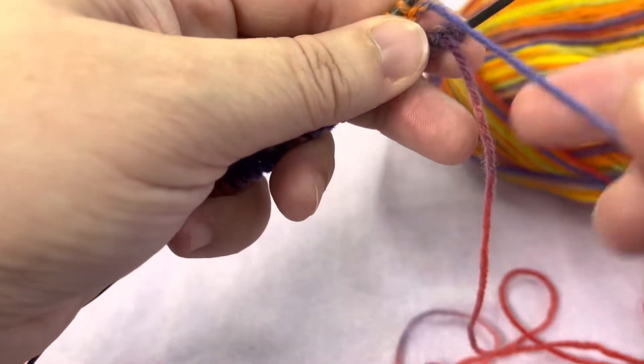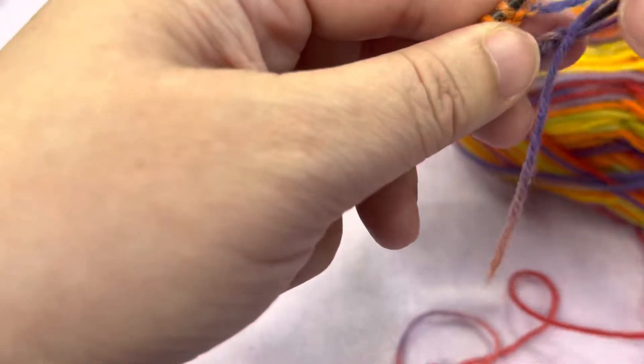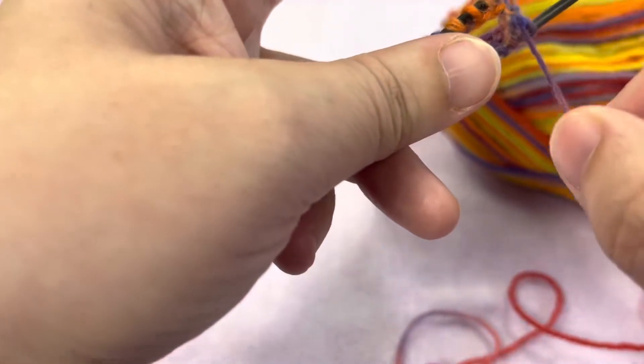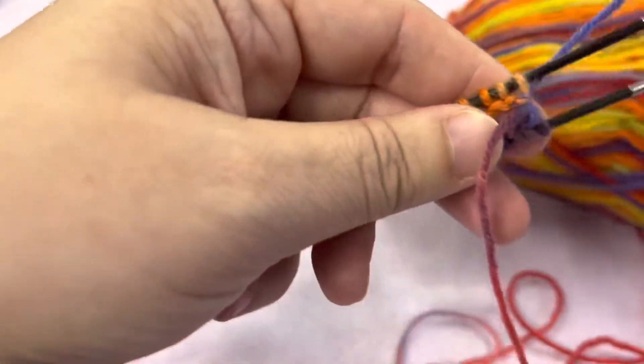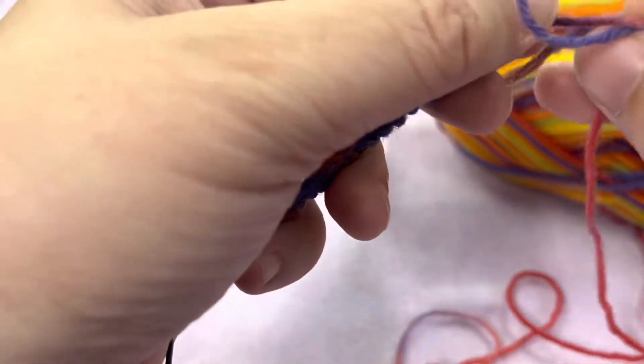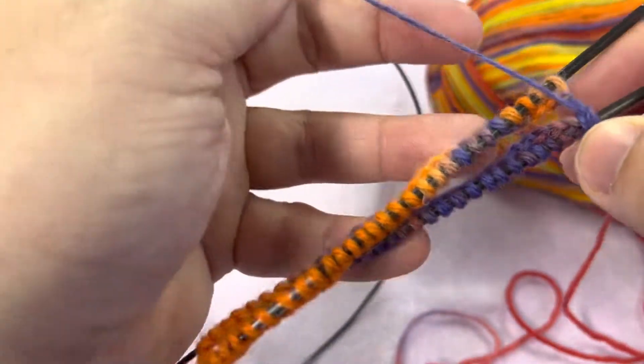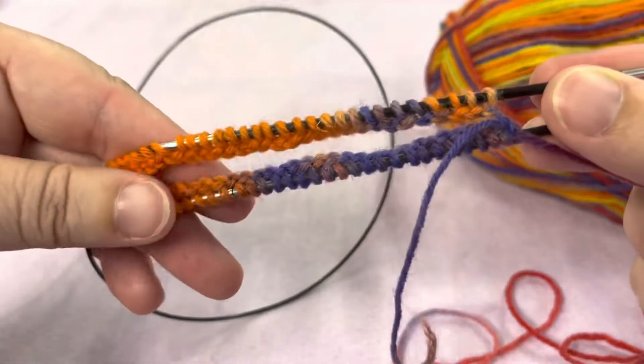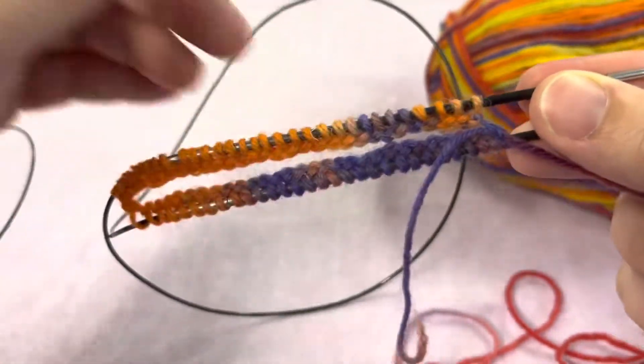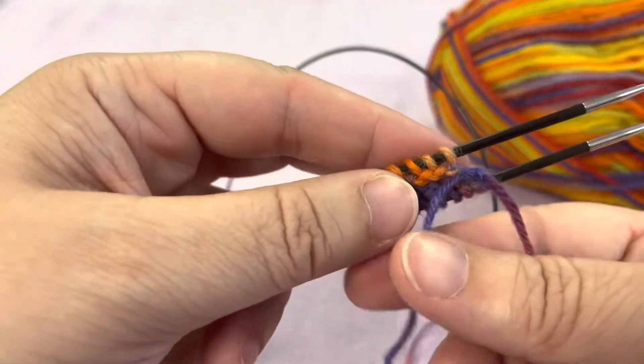So what I want to do is I'm just going to turn that all around again. I want to tie our tail to the working yarn just so that it isn't sloppy for that first round. It'll make your life a little bit easier. So I'm just tying a knot. It won't stay very tight likely, but it'll at least help when you get started.